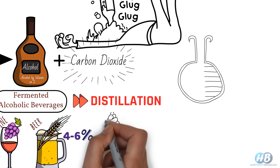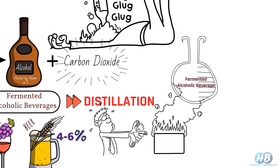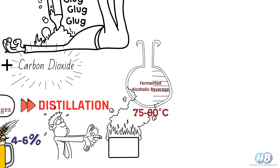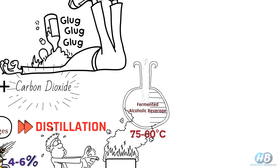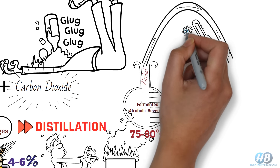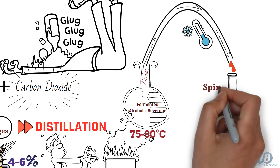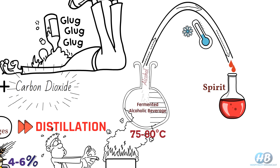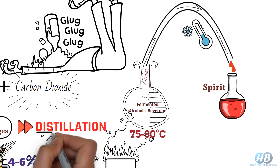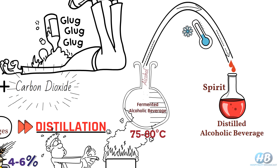That's where we move one step further and go for distillation. To explain distillation in simple terms, we heat the fermented beverage just below the boiling point of water, around 75 to 80 degrees Celsius. At this temperature, the alcohol starts evaporating but the water solution is left behind, because water starts to evaporate at 100 degrees Celsius. We then cool this evaporated alcohol, converting it back into a liquid, and we have our spirit — a distilled beverage with a much higher alcohol content, also called a distilled alcoholic beverage or distilled spirit.